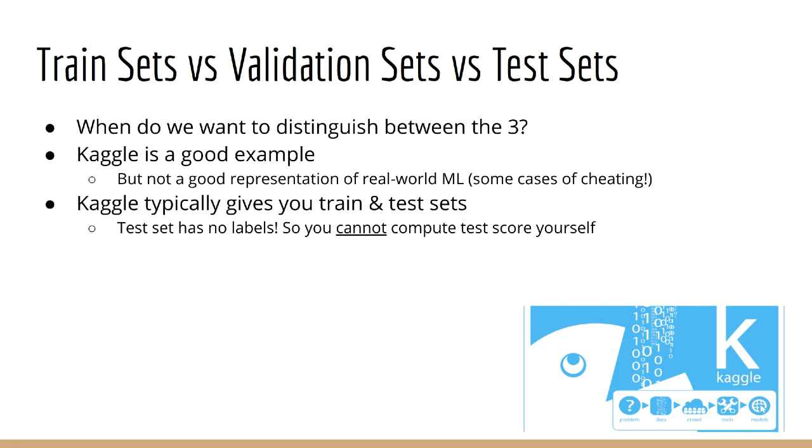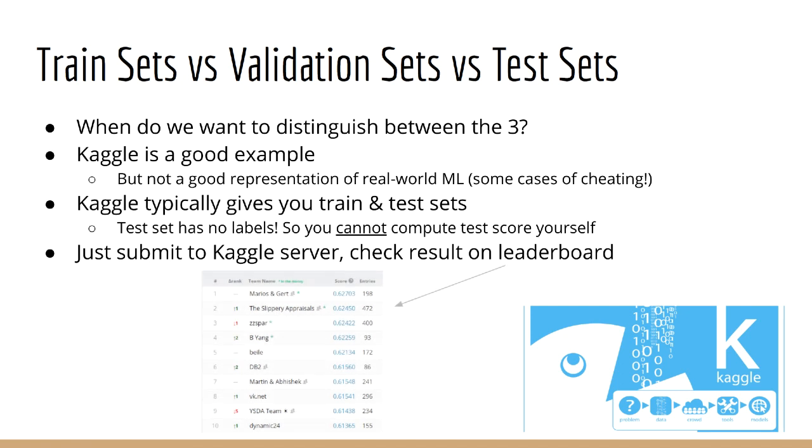This is unlike when we split the data into train and test in our class. All you can do with your test set is make predictions and submit them to Kaggle servers. Then Kaggle will show you your test score, along with the test scores from other participants. They will list these on what is called a leaderboard. This is the true test set because it's how Kaggle is testing your model.